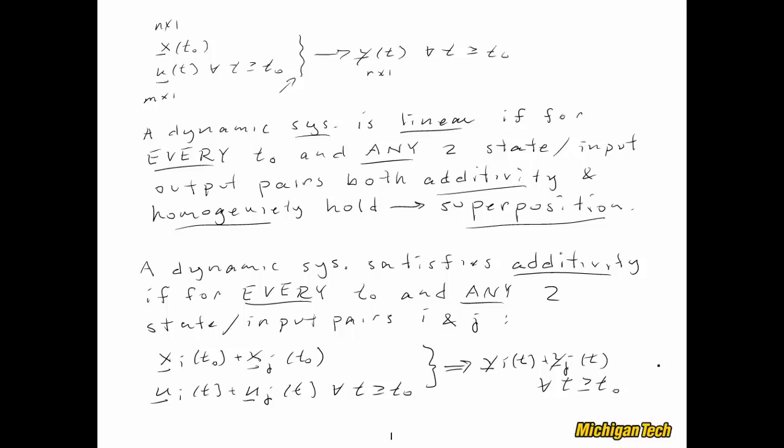A dynamic system satisfies additivity for every t0 and any two state input-output pairs, denoted with subscripts i and j. If we sum the two initial condition vectors xi plus xj, and we sum the inputs ui plus uj, then the dynamic system output is equal to the sum of the two individual outputs, yi plus yj.